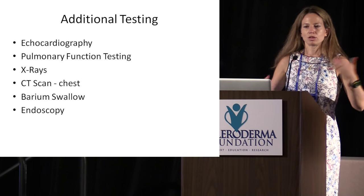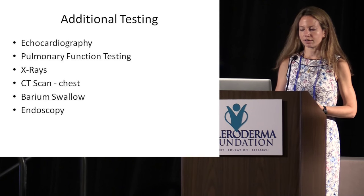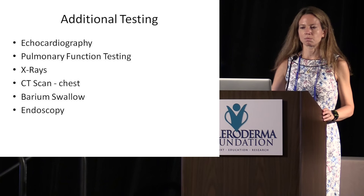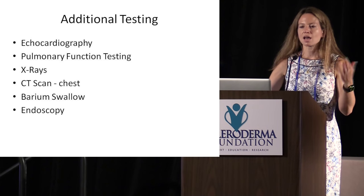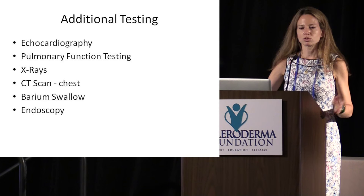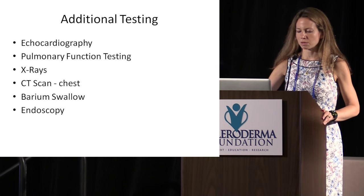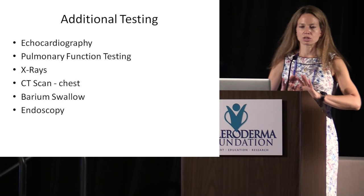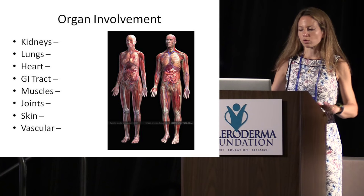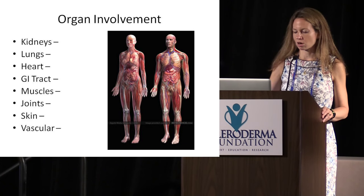After we do the blood work, we're going to do a lot of additional testing: echocardiogram, pulmonary function tests, other imaging of the chest, maybe imaging of the GI tract. We do this in the initial diagnosis of a scleroderma patient because we want to stage what's going on, get a sense of what organs are involved early on, and know how to direct our care.